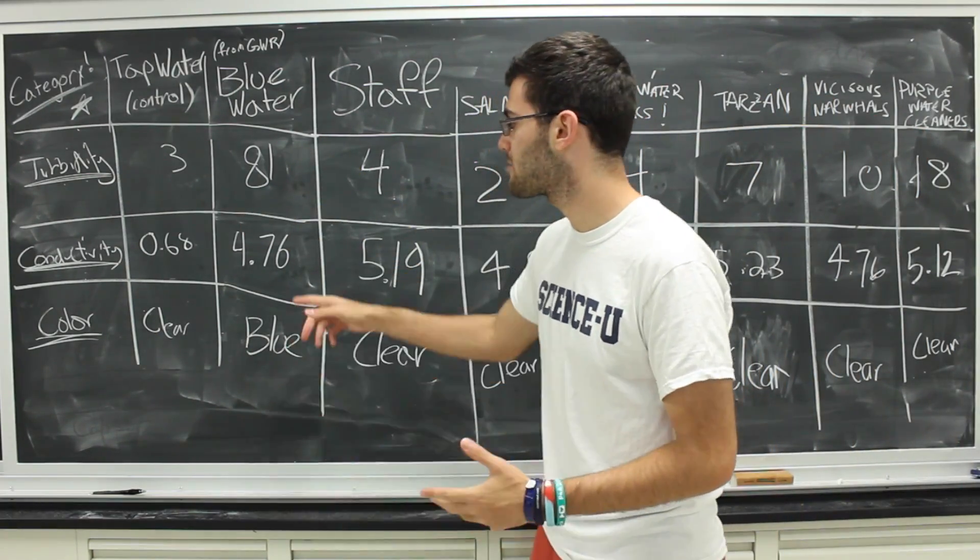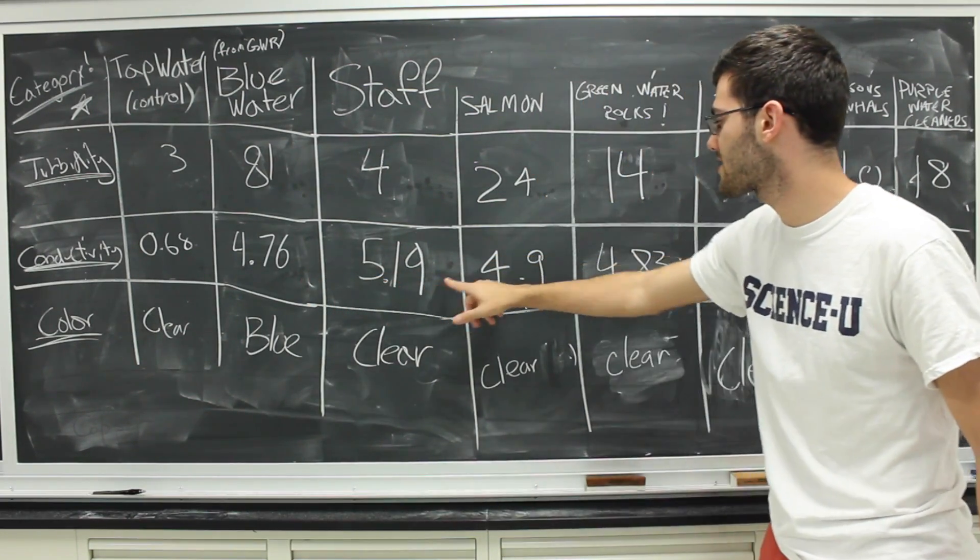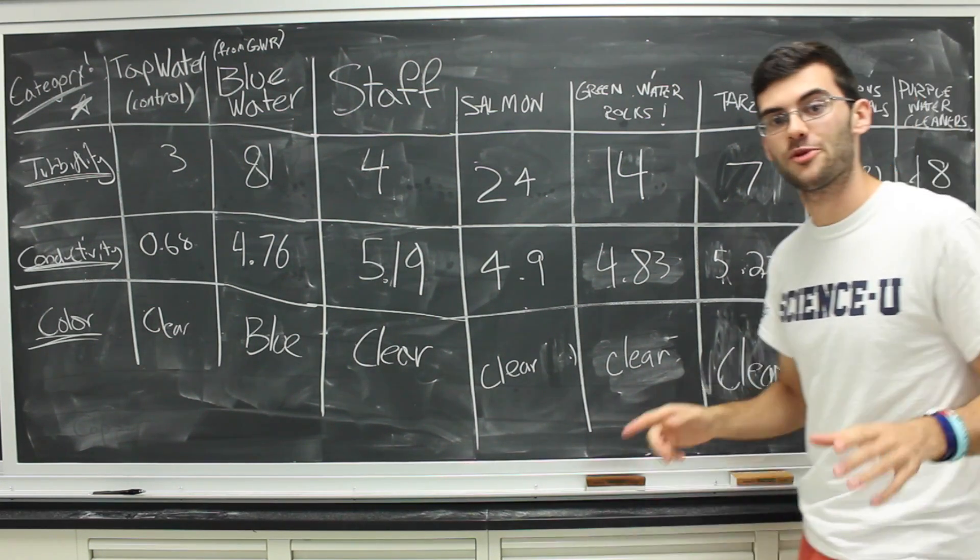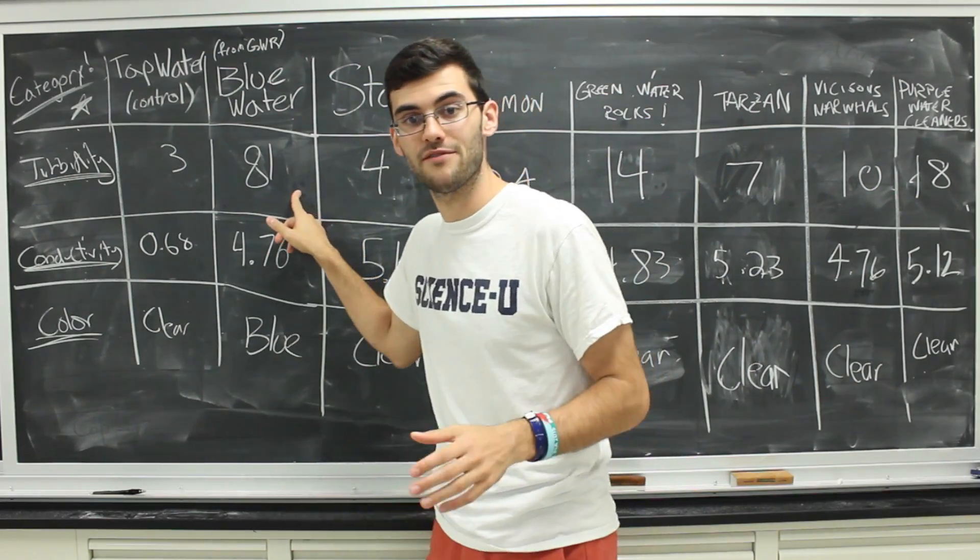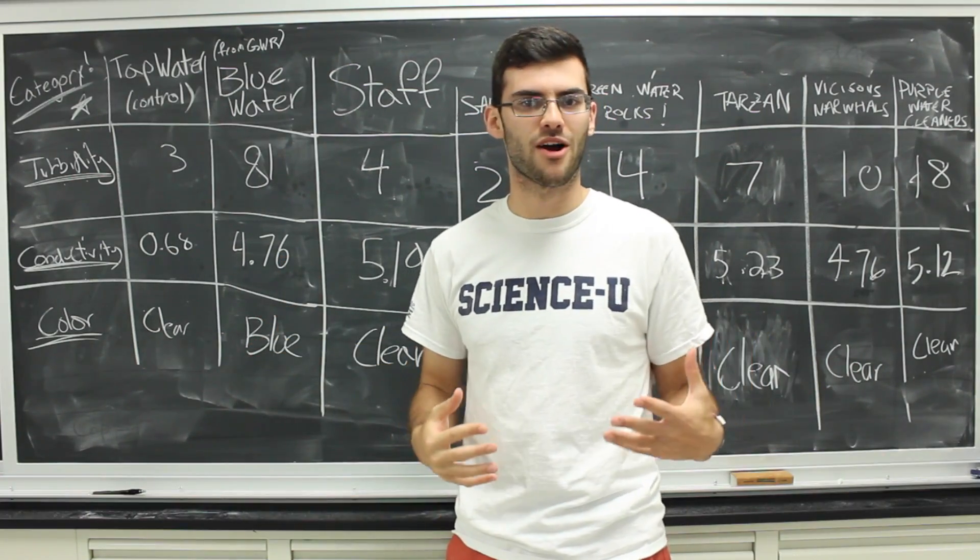But for the salinity, no group was able to lower the salt value beyond what we started with. 4.76, there was one group that matched that, but no one got lower. And here we see one of the main purposes of this experiment. We can use filters to reduce the turbidity of the water, but we can't really do much about the salinity, at least not with our current materials.